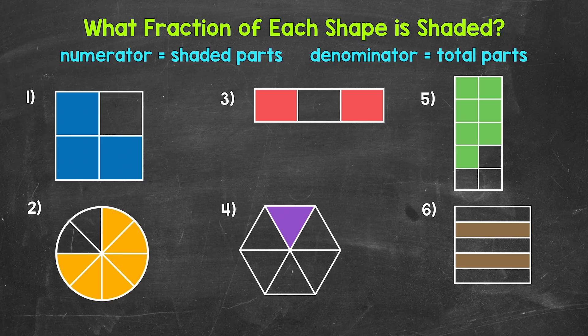So what fraction of this shape is shaded? Let's start with the bottom number of the fraction, the denominator. That's going to be the total number of equal parts a whole has been divided into.